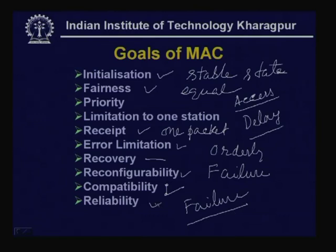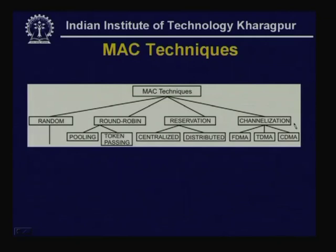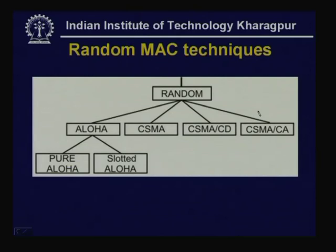Various MAC techniques can be broadly divided into four types: random, round robin, reservation, and channelization. These four categories are needed in different situations. In this lecture we shall focus on the random techniques, which are very suitable for bursty nature of traffic. Random MAC techniques can be divided into four methods: Aloha, CSMA, CSMA-CD, and CSMA-CA. We shall discuss each of them one by one.